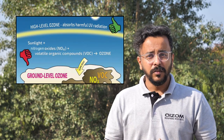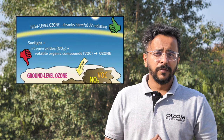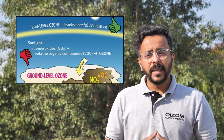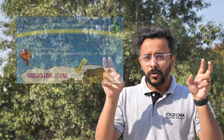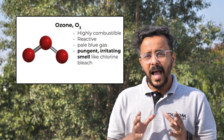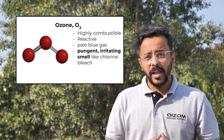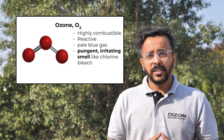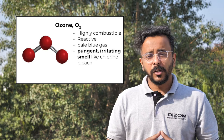However, when it is formed just above the earth's surface, it highly impacts human health and welfare, making it Bad OZON. Ground level OZON is a critical air pollutant with three oxygen atoms. It is a highly reactive, pale blue gas with a distinctively pungent, irritating smell that resembles chlorine bleach. Its odour can be detected at 0.1 ppm concentrations.